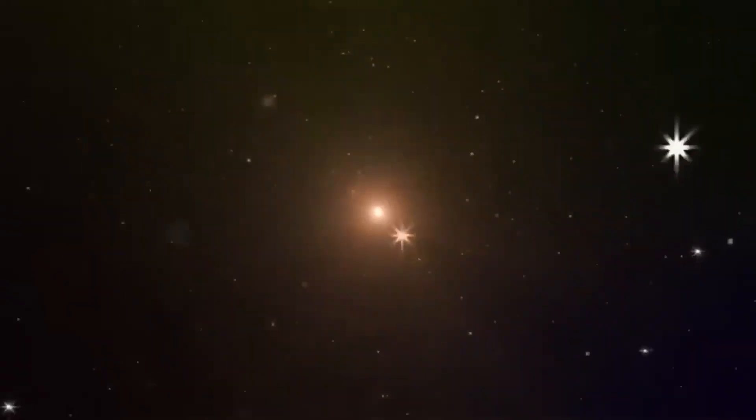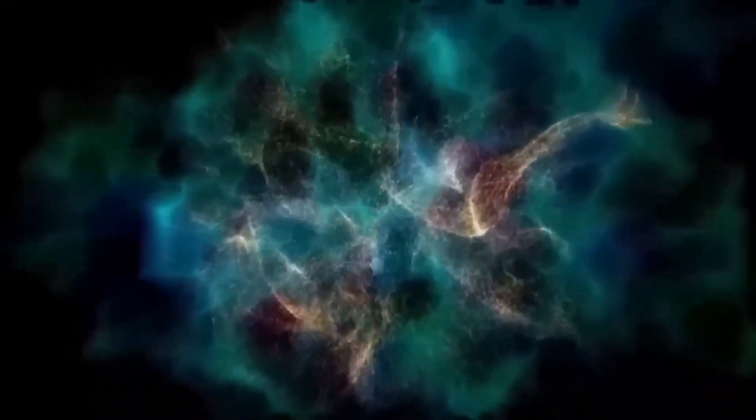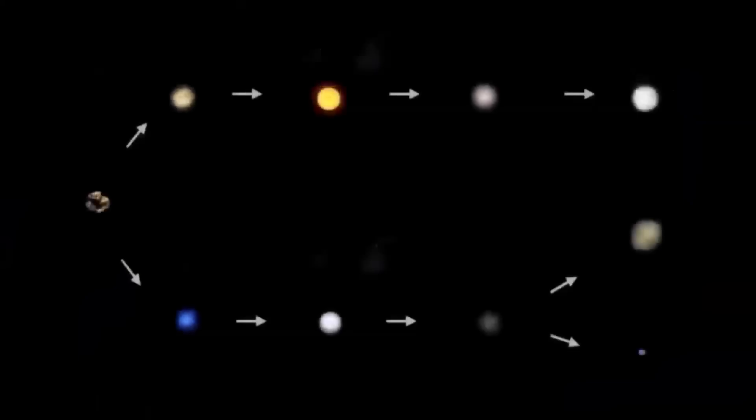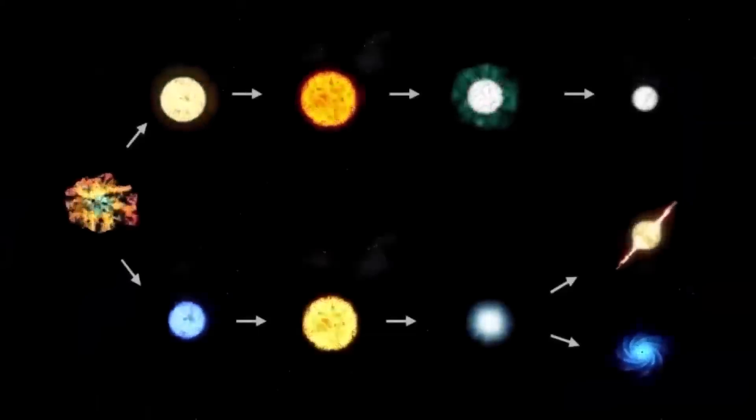Betelgeuse, one of the most fascinating stars in our night sky, is located approximately 725 light years away from Earth. This means that the light we observe from it today actually began its journey toward us around 725 years ago.